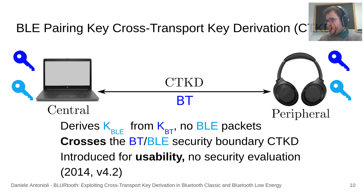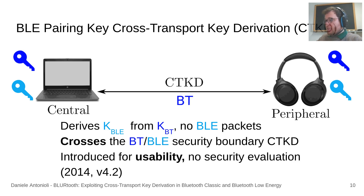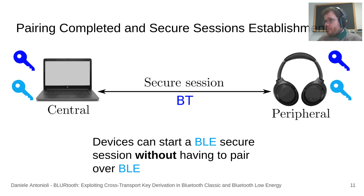The BLE key is computed using the key derivation function specified in the Bluetooth standard, taking as inputs the BT pairing key and some constants. The key observation we made in 2020 when we started this research is that CTKD crosses the security boundary between BT and BLE, as K_BLE is established by trusting what happens over BT. We can also cross the boundary by starting pairing over BLE and running CTKD to derive K_BT. CTKD was introduced in 2014 with Bluetooth 4.2 as a pairing usability enhancement, but we are the first looking at its security implications. Pairing over BT is completed, and the victims can use K_BT and K_BLE to start secure sessions on both transports without pairing over BLE.